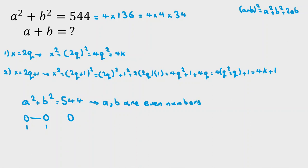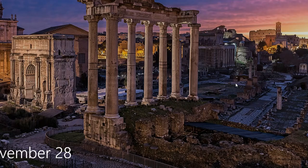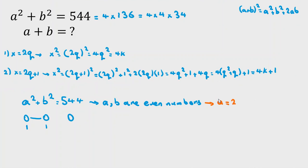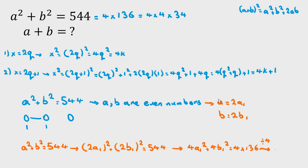So in the next step, we can say a equal to 2a1, b equal to 2b1, and a squared plus b squared, which is 544, equal to 2a1 squared plus 2b1 squared, equal to 544. It is 4a1 squared plus 4b1 squared, equal to 4 times 136. Now we divide both sides by 4, and a1 squared plus b1 squared equal to 136.